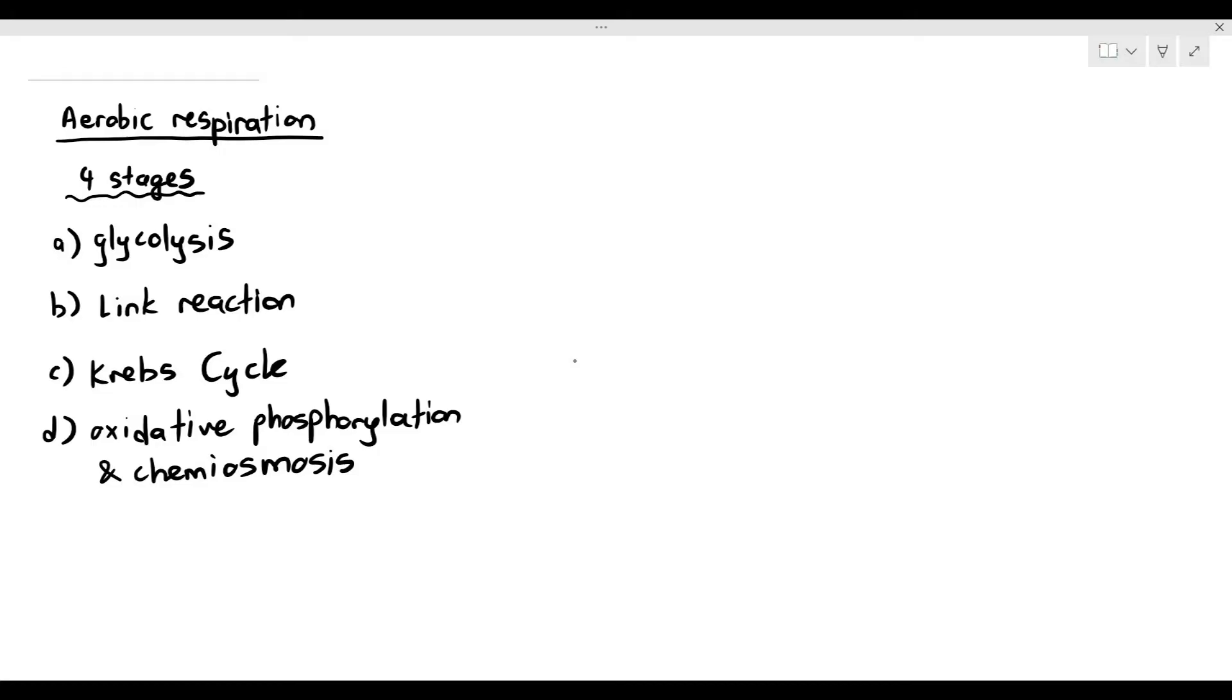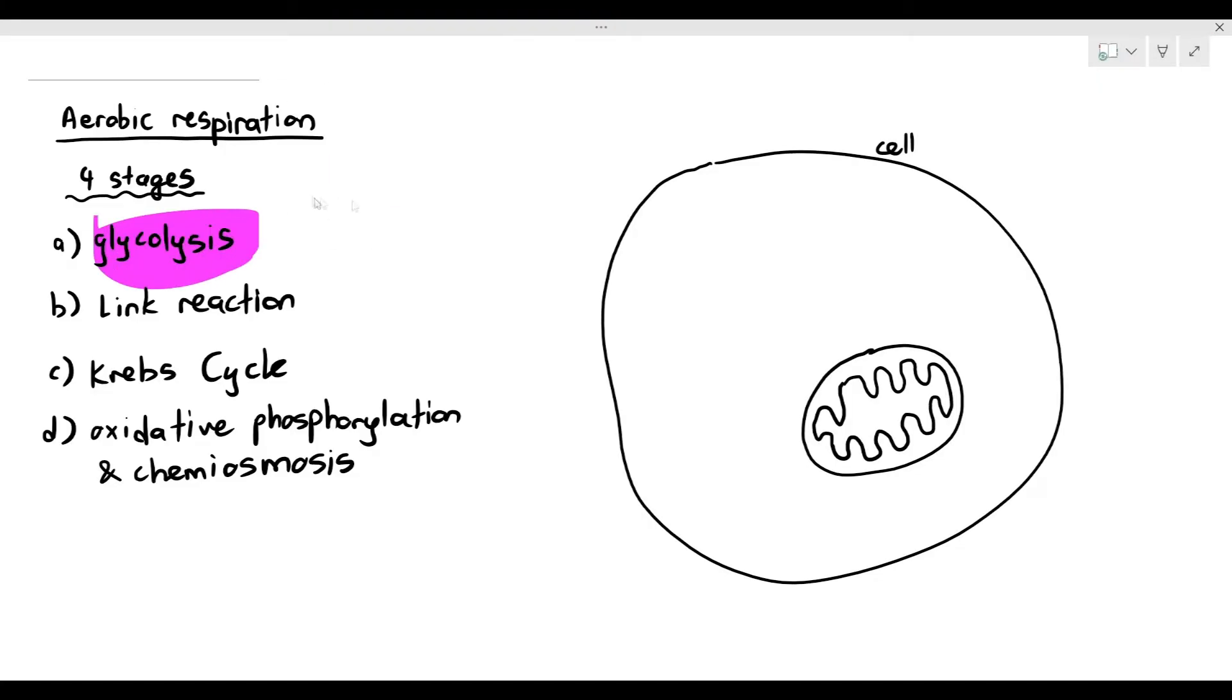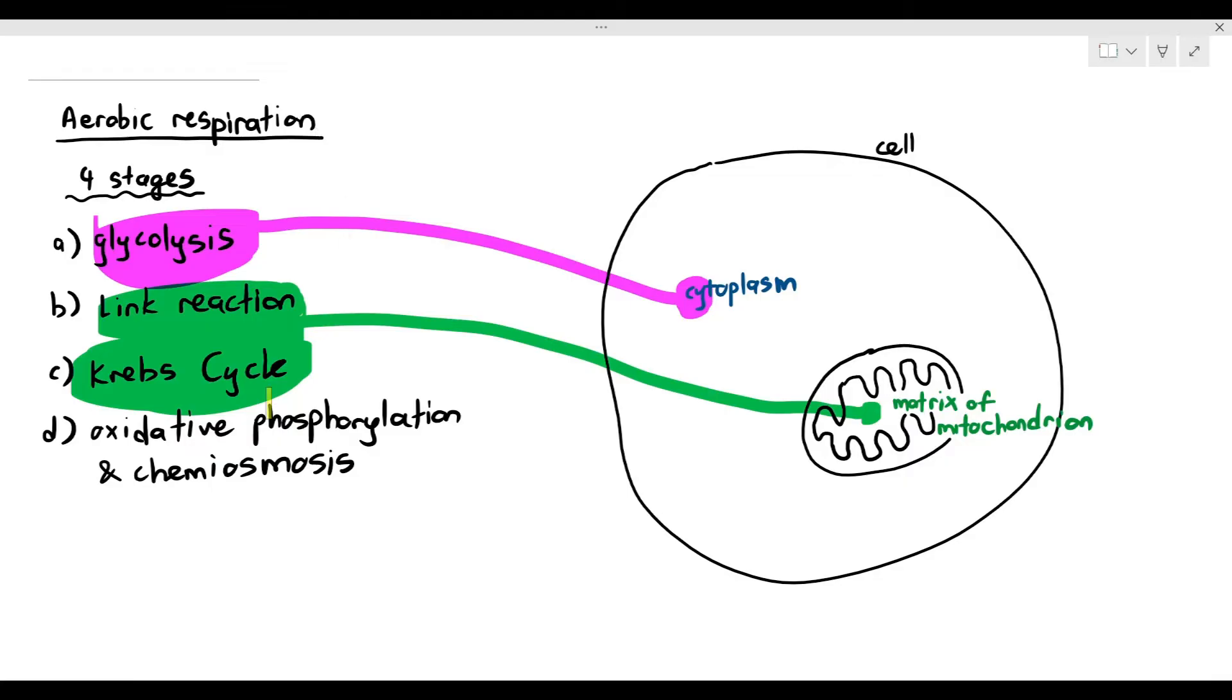It is very important as a student to know where these processes happen inside the cell. Glycolysis happens in the cytoplasm, link reaction and Krebs cycle happen in the matrix of the mitochondrion, and oxidative phosphorylation together with chemiosmosis happen in the inner mitochondrial membrane or the cristae. You can refer to them as both.